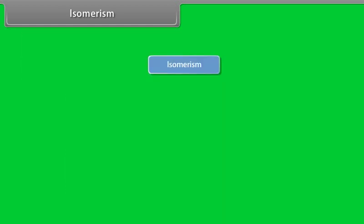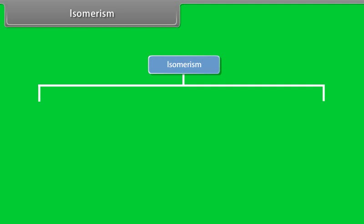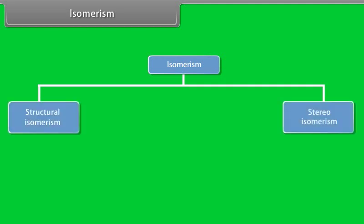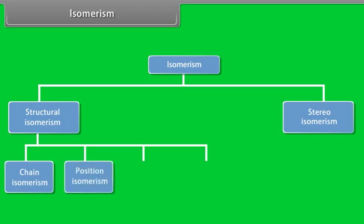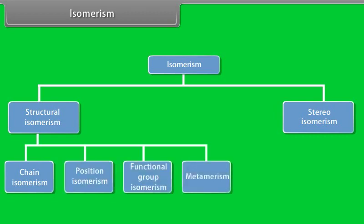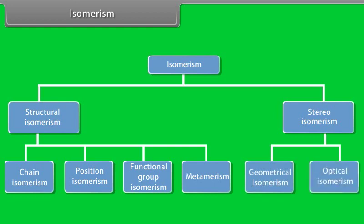Different types of isomerism: Isomerism can be grouped into structural and stereoisomerism. Structural isomerism can be subdivided into chain isomerism, position isomerism, functional isomerism, and meta-isomerism. Stereoisomerism is further categorized into geometrical and optical isomerism.